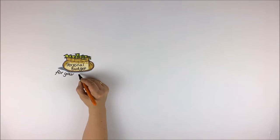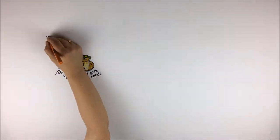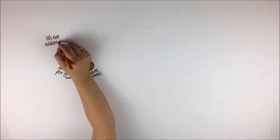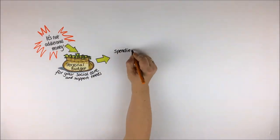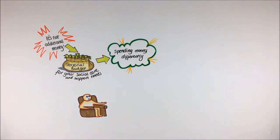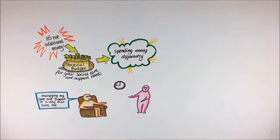A personal budget is for your social care and support needs. If you already have a personal budget, this is not additional money, but it may mean spending money differently so that you can get the care and support that you need. It allows you to manage your care and support in a way that suits you.